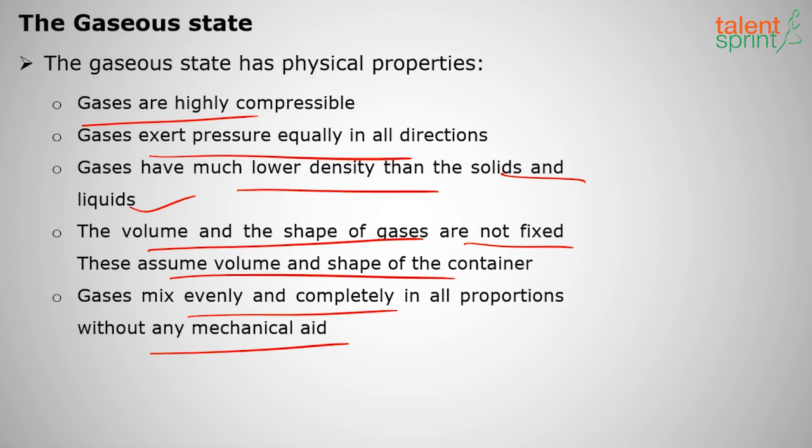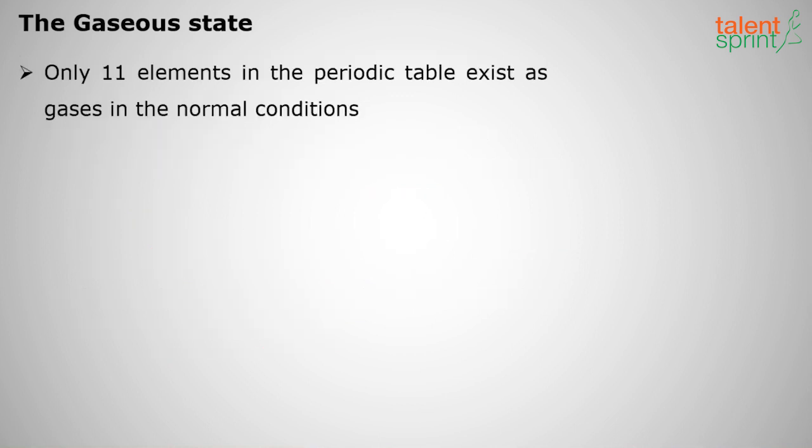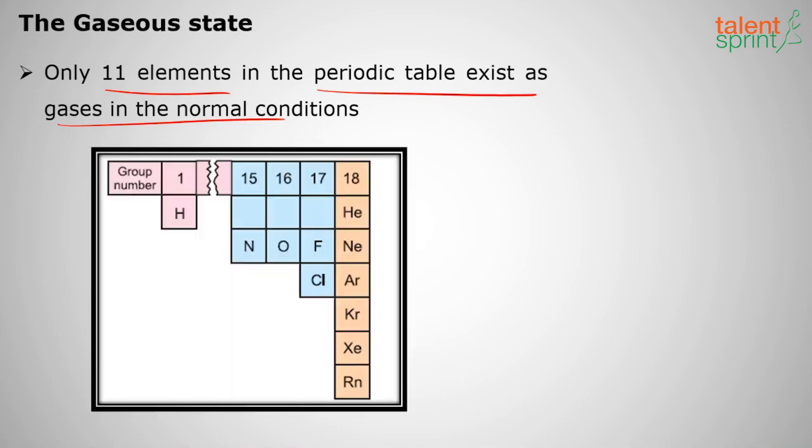There are only 11 elements in the periodic table which exist as gases under normal conditions: hydrogen, nitrogen, oxygen, fluorine, chlorine, helium, neon, argon, krypton, xenon, and radon. These are inert gases and these are the normal gases.